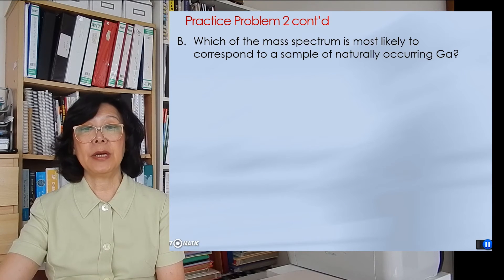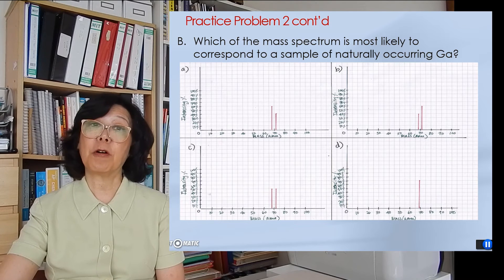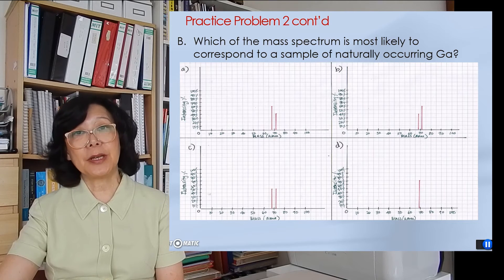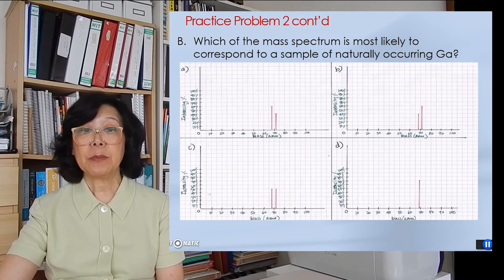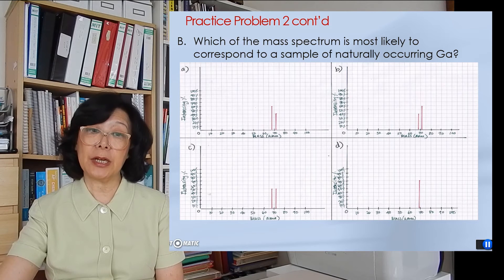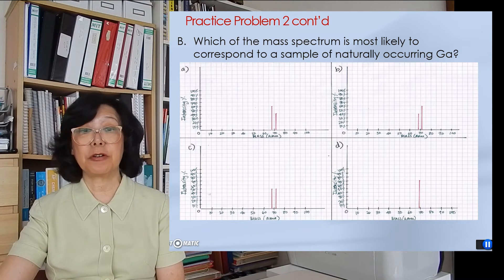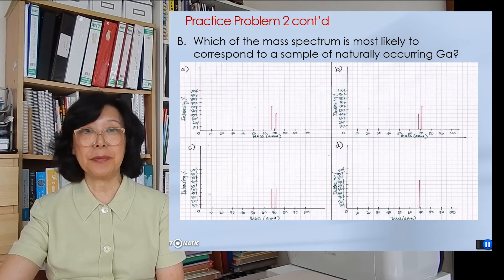Now, we are then asked to pick the spectrum out of four following spectra that would correlate to our calculations. Upon careful examination, I would pick spectrum A, because it has a taller peak on the left representing gallium-69, and a smaller, shorter peak on the right representing gallium-71.